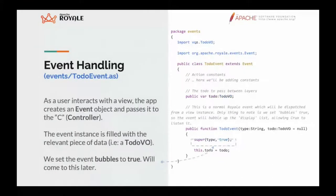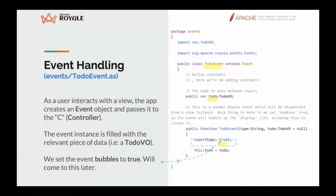Then we have event handling with an application-level event used to send events across the application. In this event we fill a to-do VO and mark it as a bubble event — we'll see what bubbles mean later in the presentation.